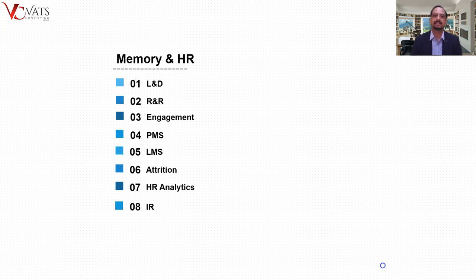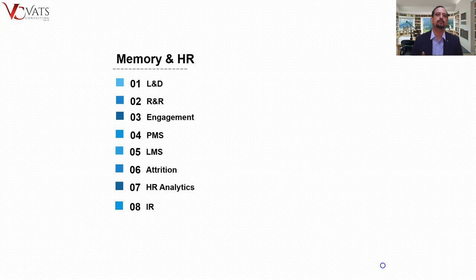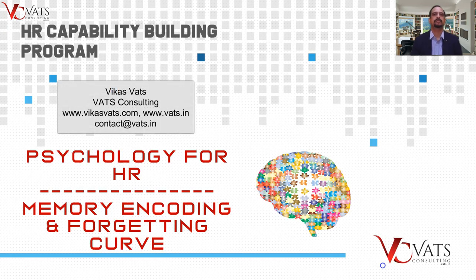For all L&D programs, feedback needs to be taken at the right time - ideally right after the training program. Many times, feedback is collected at the very end when the program has already run 5, 10, or 30 minutes extra, and we don't have time, so we just hand out forms or send links later. But if it's taking time, you are diluting the actual feedback. Whatever you choose to do for feedback timing, it has to be done by design and not by default. This was Vikas Vats from Value Added Training Systems and Consulting. Under the HR Capability Building Program - Psychology for HR series - we've learned about memory encoding techniques, the forgetting curve, and how this knowledge is useful in various HR processes, especially L&D. Take care, good day, see you again.